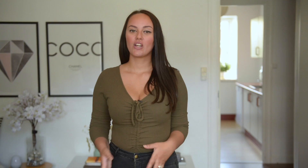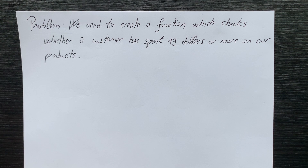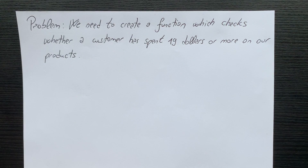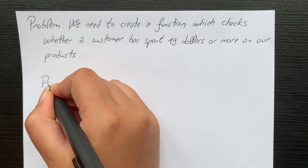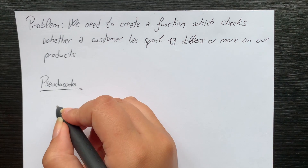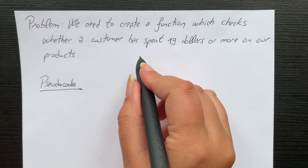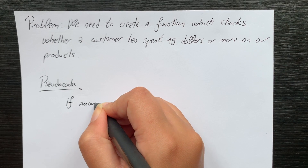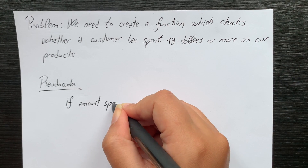Which brings me to number three: code by hand or use pseudocode. Once you break your problem into smaller pieces, grab a piece of paper and start writing in plain English what you want your code to accomplish. This is called pseudocode. For example, we have a client who wants to know which customers are buying their high-end products. The problem is we need to create a function which checks whether a customer has spent $19 or more on their products.